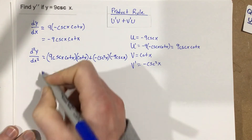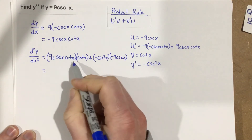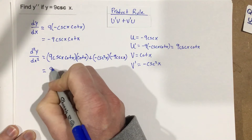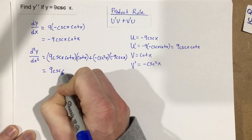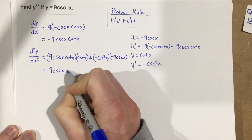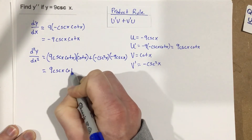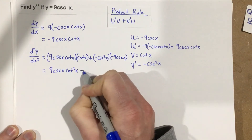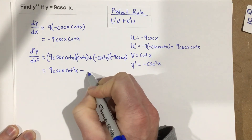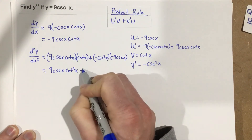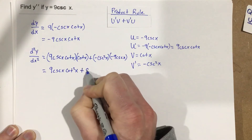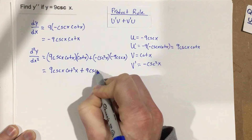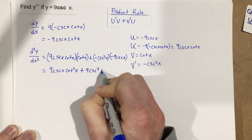So then if I multiply these out, I get 9 cosecant x cotangent squared x — plus, because of the two negatives — plus 9 cosecant cubed x.